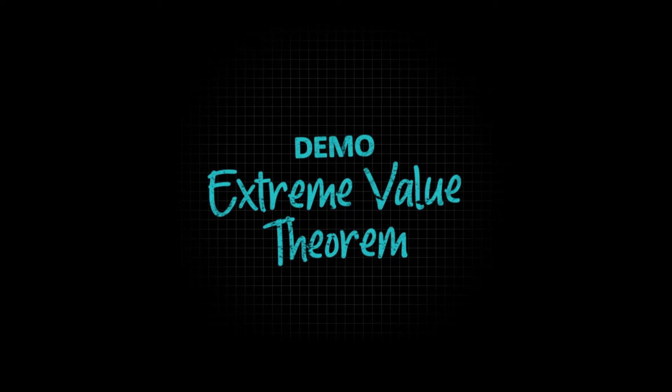We know that the extreme value theorem requires the function to be continuous on a compact set. Let's look at a general function to start. How do we know that a function must attain its maximum and minimum value if it's defined on a compact set? Well, there's two things to keep in mind. First, it must be defined everywhere on the compact set, meaning that we can't have any domain restrictions.